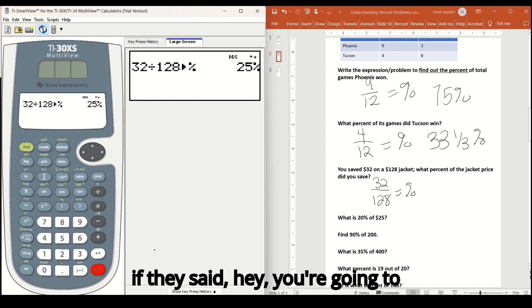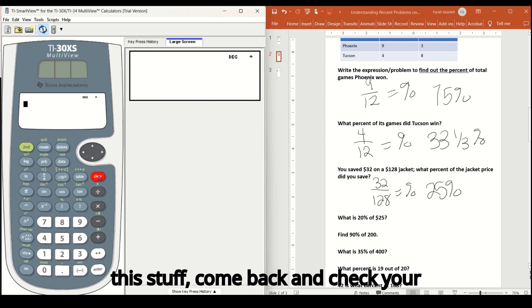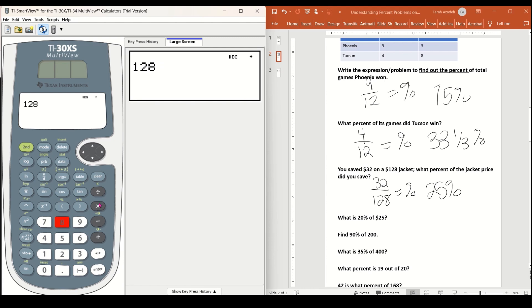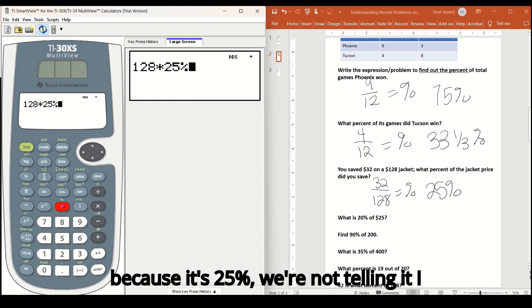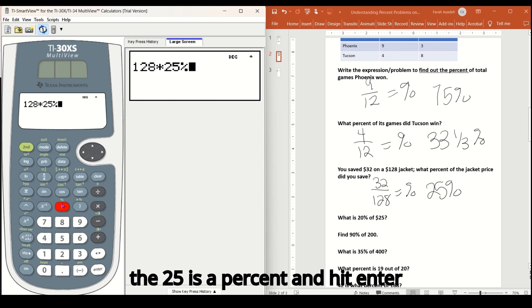So I saved 25% of that jacket price is $32. So if they said, you're going to get 25% off, I know that's $32. And we can always check our work. If you have a hard time believing some of this stuff, come back and check your work. 128 times 25 seconds, because it's 25%. We're not telling it I want my answer as a percent. We're saying the 25 is a percent and hit enter. And it's 32. It all worked out folks.